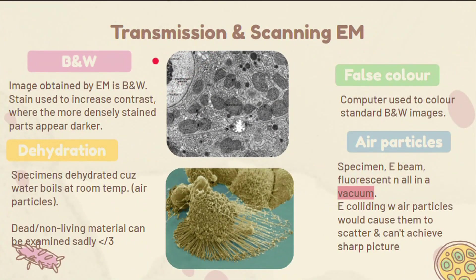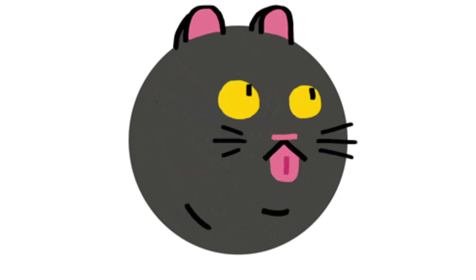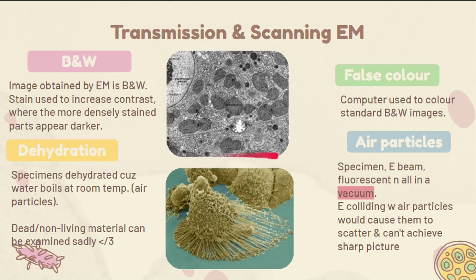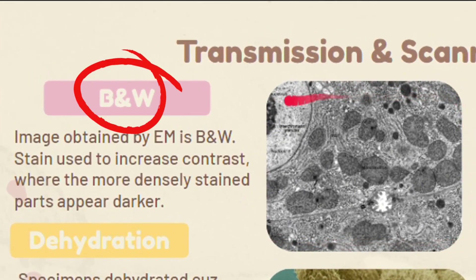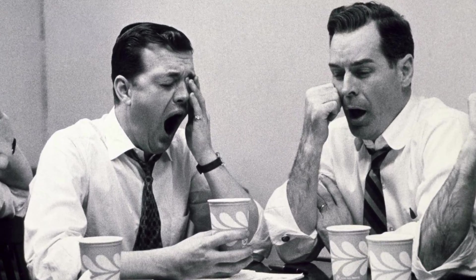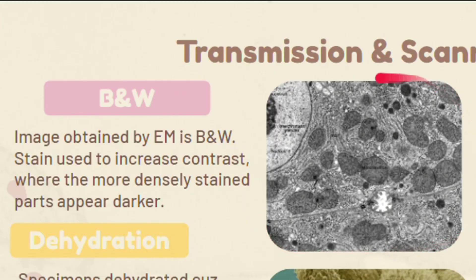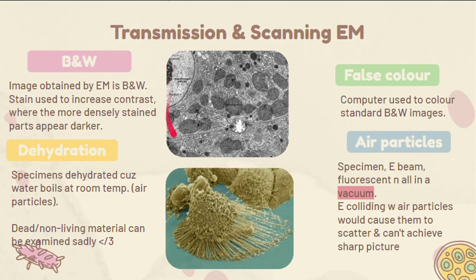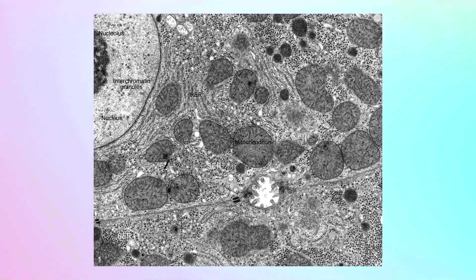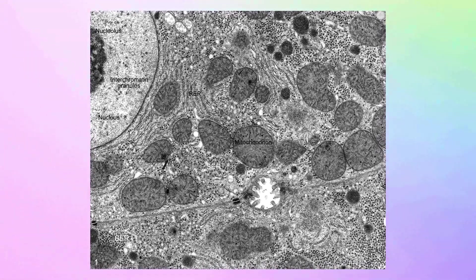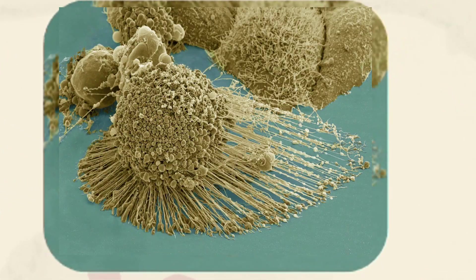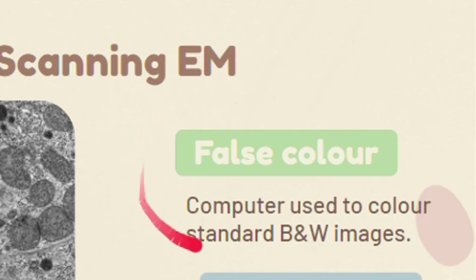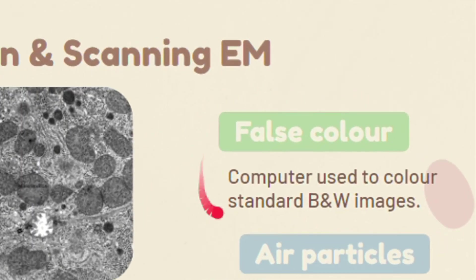Four key things you want to know about electron microscopes before your attention span gives in. First, the original image is actually in black and white — not the most exciting, but a stain is used to increase contrast, and thus more densely stained parts appear darker, still giving it depth and a nice look. An alternative is false color, where a computer is used to color standard black and white images.